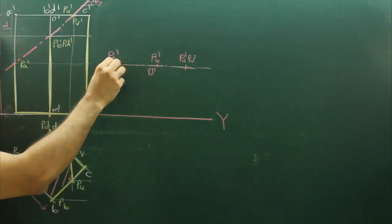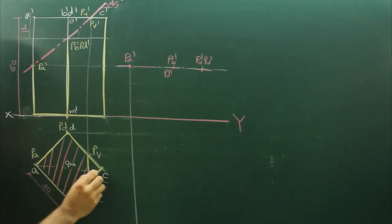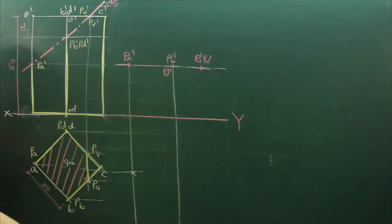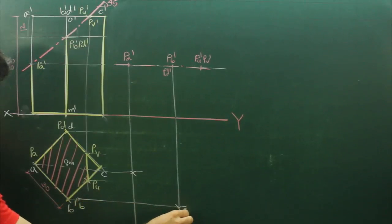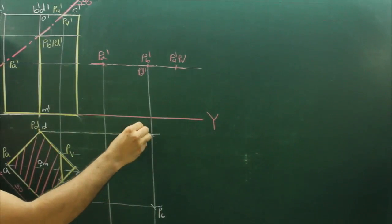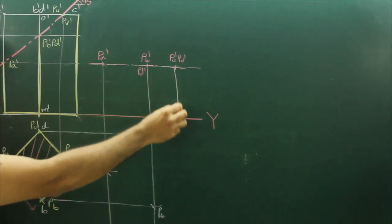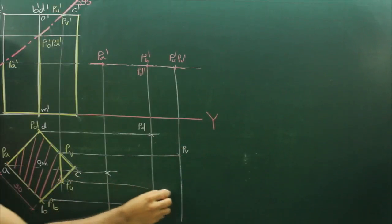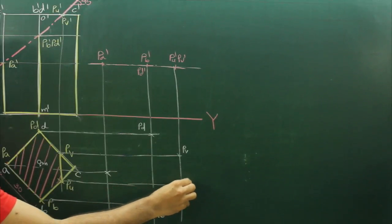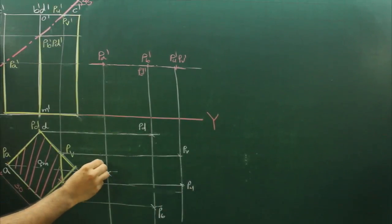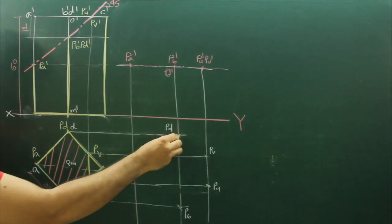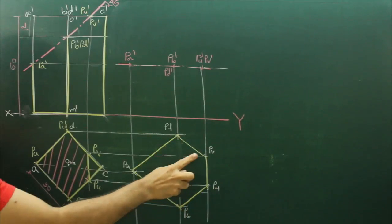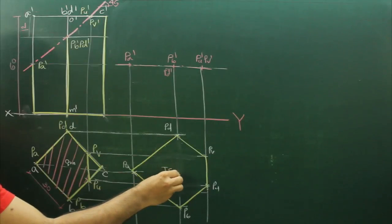Then we will project from PA prime and we will project PA prime from here, so we will get one point. Then we will project PB prime and PD prime, and extend PB prime from here and PD prime from here. Then we will extend PU prime and PV prime, and from here we will extend PV prime and PU prime. And this is PA prime, PD prime, PV prime, and PU prime, and PB prime.